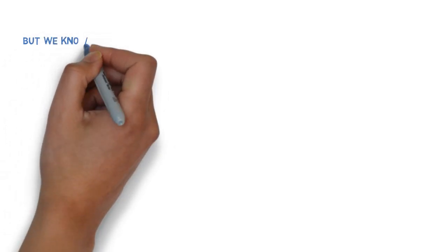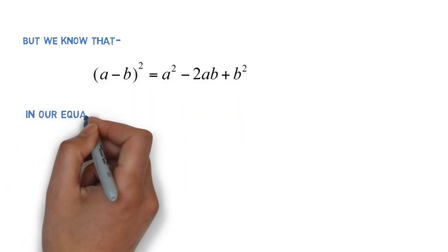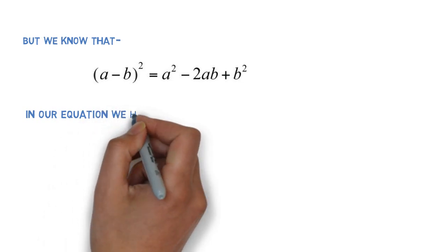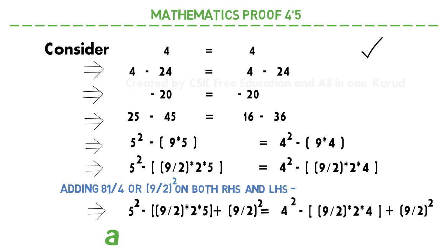Now we know that A minus B whole square - this is a mathematical algebraic formula. A minus B whole square is equal to A square minus 2AB plus B square. And in our expression, if I compare this formula with our expression, I will get A is equal to 5 and B is equal to 9 by 2.